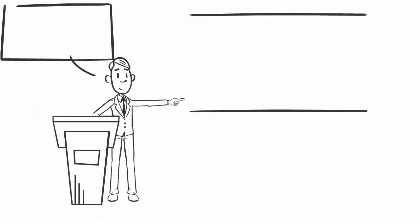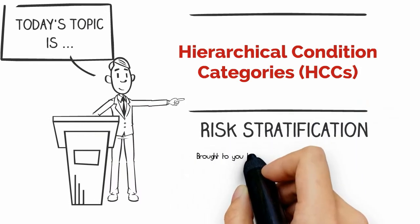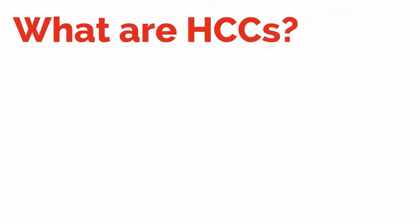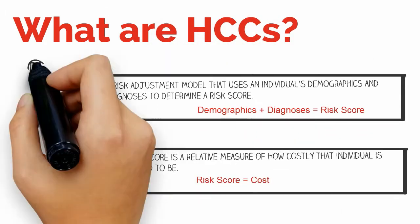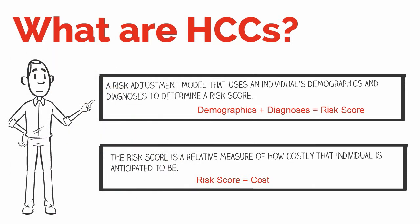Today's topic is Hierarchical Condition Categories, otherwise known as HCCs. HCCs, simply put, is a risk adjustment model that uses an individual's demographics and all their diagnoses to determine a risk score. That risk score is a relative measure of how costly that individual is expected to be throughout the year.